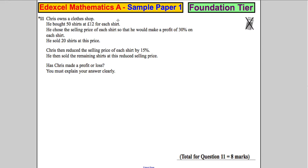Question 11. Chris owns a clothes shop - let's highlight the key information. He bought 50 shirts at £12 for each shirt. He chose the selling price of each shirt so he would make a 30% profit on each shirt. He sold 20 shirts at this price. He then reduced the price by 15% and sold the remaining shirts at that price. Has Chris made a profit or a loss? Explain your answer.